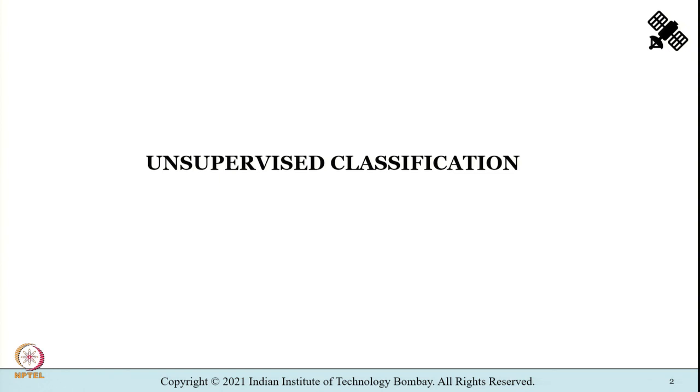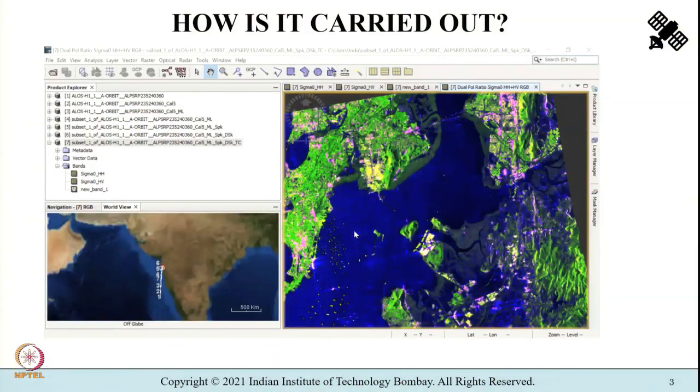In today's lecture let us understand the second category of labeling pixels, that is unsupervised classification. Before we discuss about unsupervised classification, just for a change let us view how it is carried out using SNAP — that is the Sentinel Application Platform. SNAP is a common architecture for all the Sentinel toolboxes and you shall be getting acquainted with SNAP throughout the course of tutorials. Let us see how unsupervised classification is performed here.